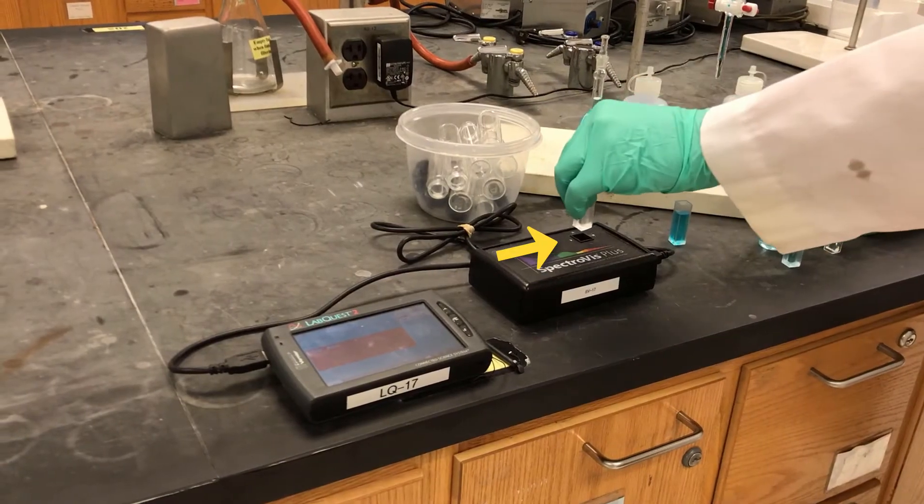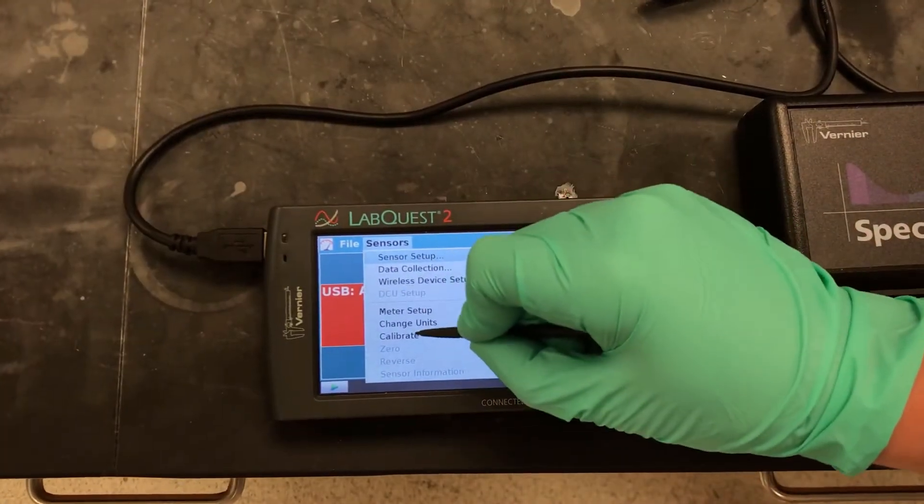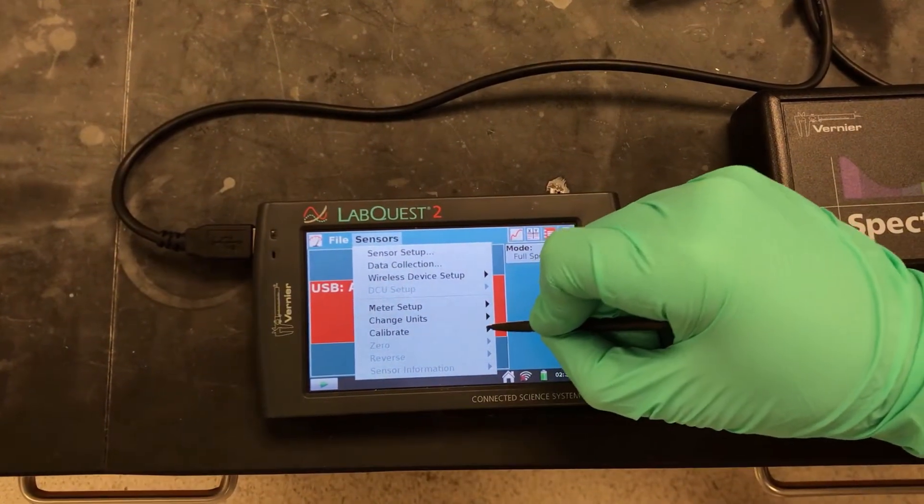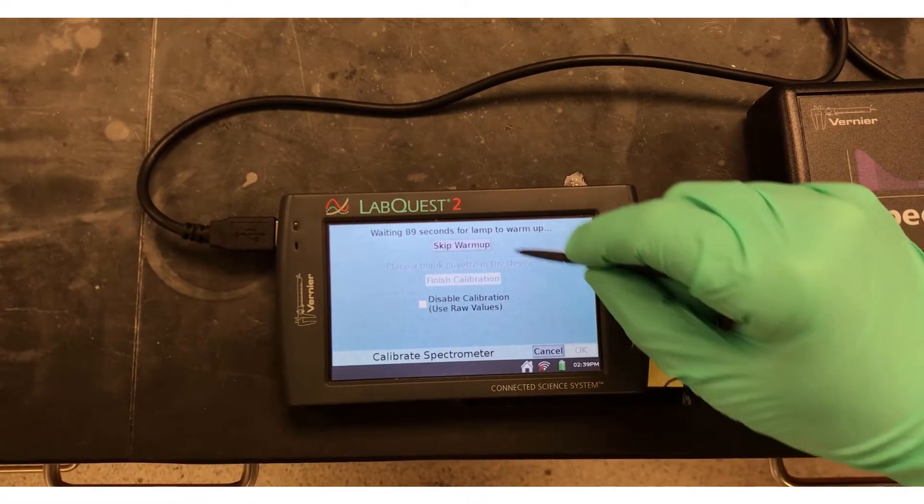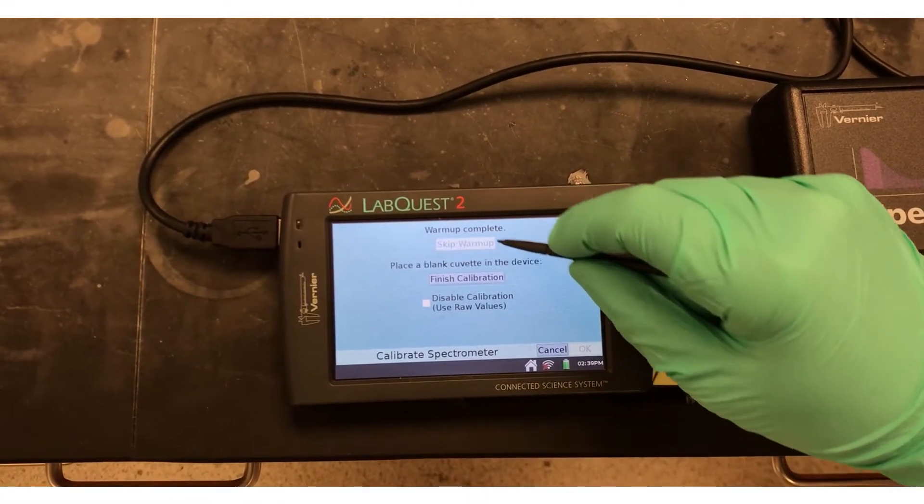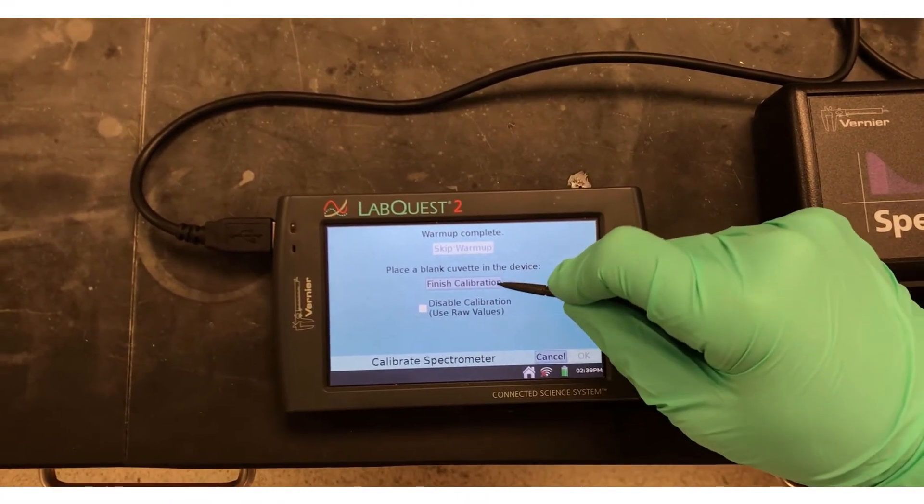To calibrate the instrument, insert a blank, which is a clean cuvette filled with deionized water. Tap sensors, then calibrate. Calibrate the spectrophotometer. Tap OK, and if the SpectroVis has already been in use, you may skip the warmup. Once warmup is completed, click Finish Calibration.